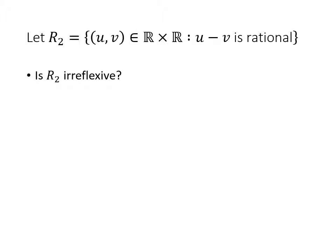Now we're moving on to a new relation here. This time, our set is the real numbers, and the relation is that (u, v) gets into my relation if u - v is rational. So this time, the question is, is R2 irreflexive?